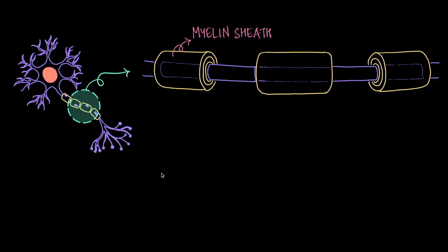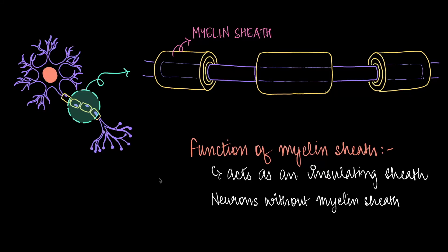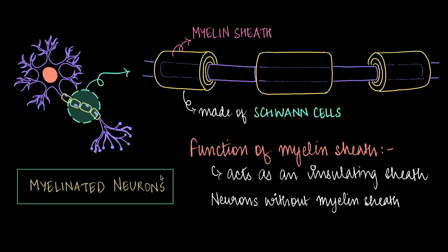Now this myelin sheath resembles the plastic coating around electrical wires. It acts as an insulating sheath which prevents the signal from leaking out and keeps the signal stronger. This myelin sheath is not one long sleeve, but rather it is made up of many Schwann cells that wrap around the axon. Those axons which have myelin are said to be myelinated neurons, while those without it are unmyelinated neurons.